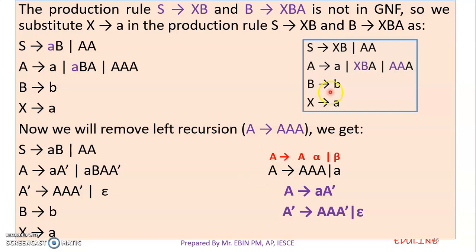Then A tends to replace the product. Now we will search for this one, and we will satisfy Greibach Normal Form. We will say S tends to XB — this is Greibach Normal Form. S tends to A — A is satisfied. Then A tends to XB is satisfied. A tends to A — A is satisfied. The other things are satisfied. B tends to b and X tends to a.